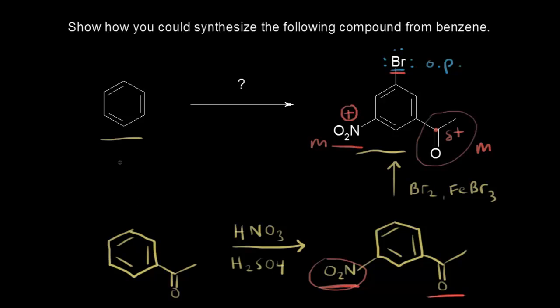Now all we have to do is go from benzene to this molecule — that's a Friedel-Crafts acylation reaction. When we think about what acyl chloride to use, we count the carbons: one and two. So we need a two-carbon acyl chloride. And then we need a catalyst — something like aluminum chloride will work.